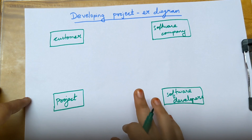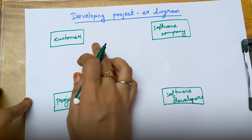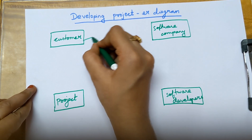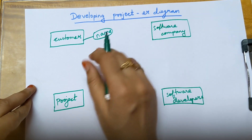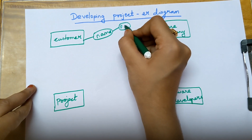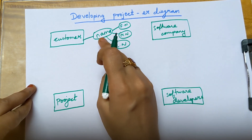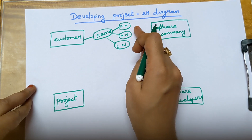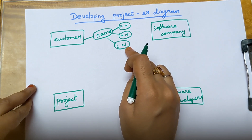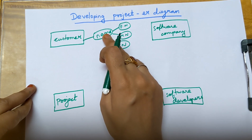If you take customer, what are all the characteristics of the customer? We need to write them surrounding the entity box. An attribute must be written inside an oval shape. The first attribute of customer is name, written inside an oval. This name can be further divided as first name, middle name, and last name. If you are able to divide an attribute further, it is known as a composite attribute. So name is a composite attribute.